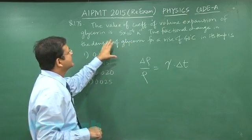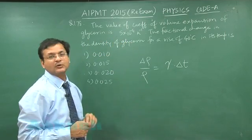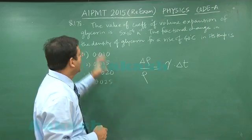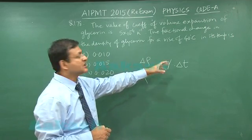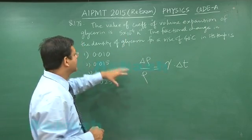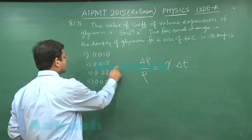of volume expansion of glycerin is 5 × 10^-4 per Kelvin. So gamma equals 5 × 10^-4, and the temperature rise is 40 degrees Celsius. Simply multiply these two values to get the required answer. The correct answer